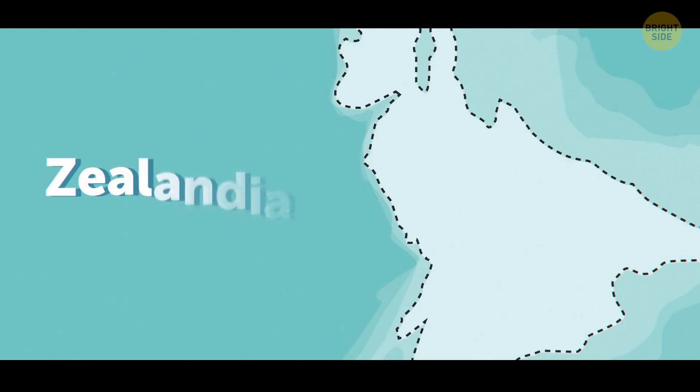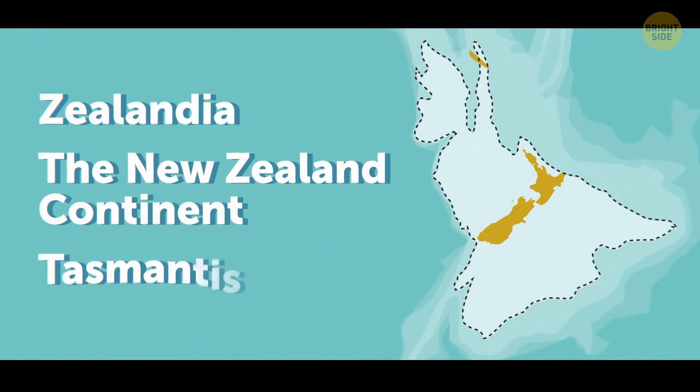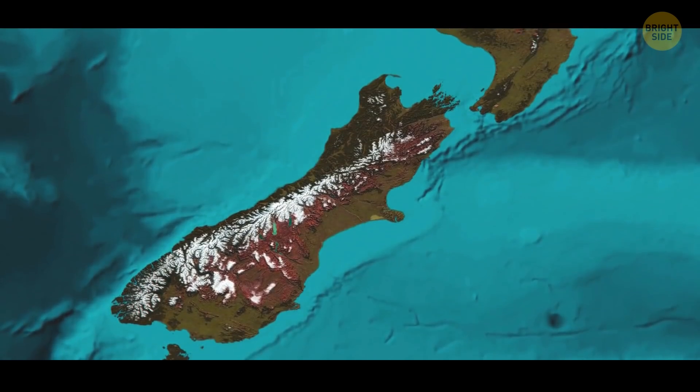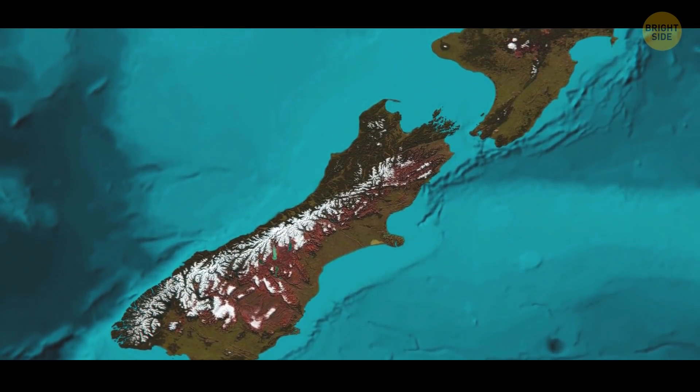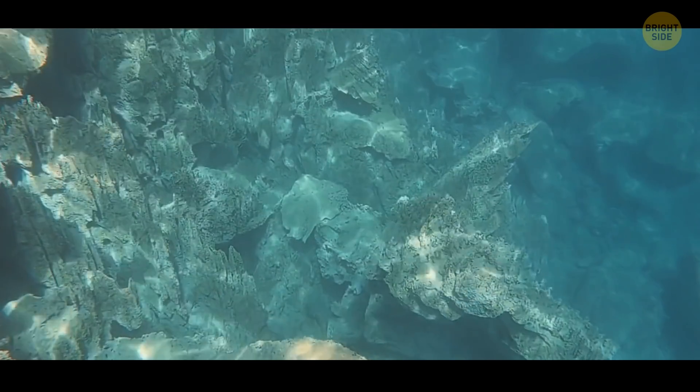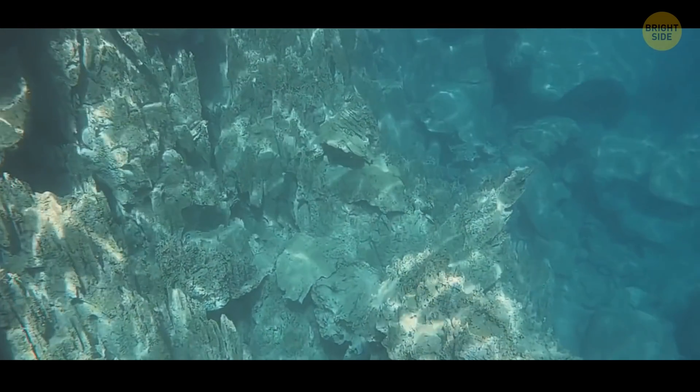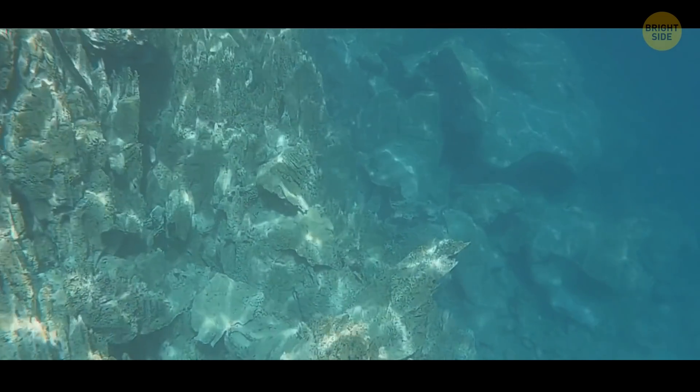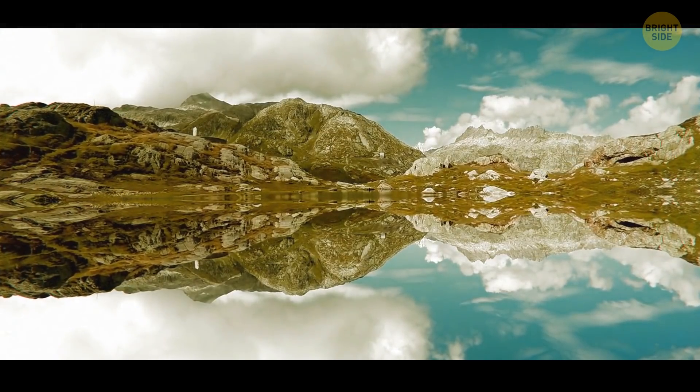In fact, I know a continent that's mostly underwater yet isn't lost at all. Ever heard of Zealandia? It's also called the New Zealand continent, or Tasmantis. It looks like an archipelago, which is a string of islands. But if you peak under the water, you'll see that it's really one continuous piece of submerged land with mountaintops poking out over the surface.